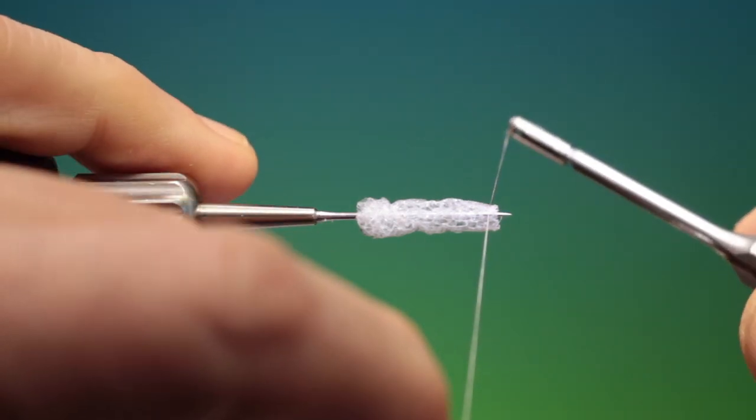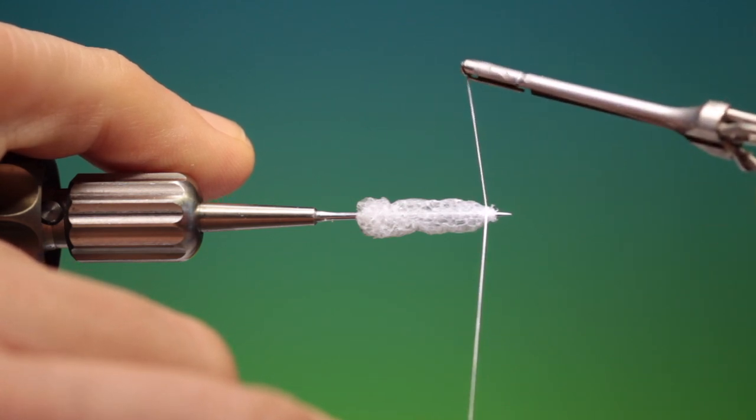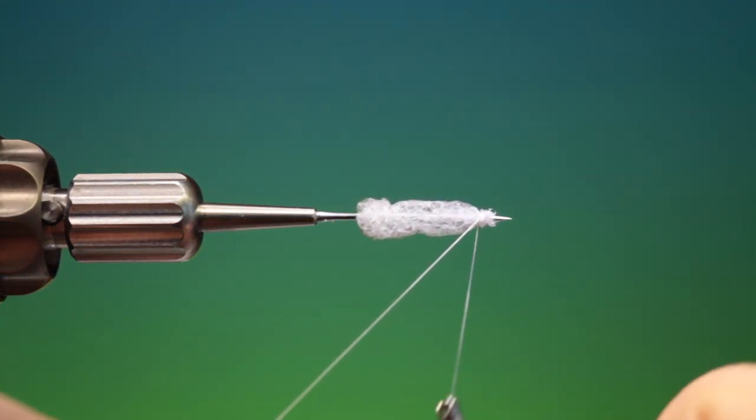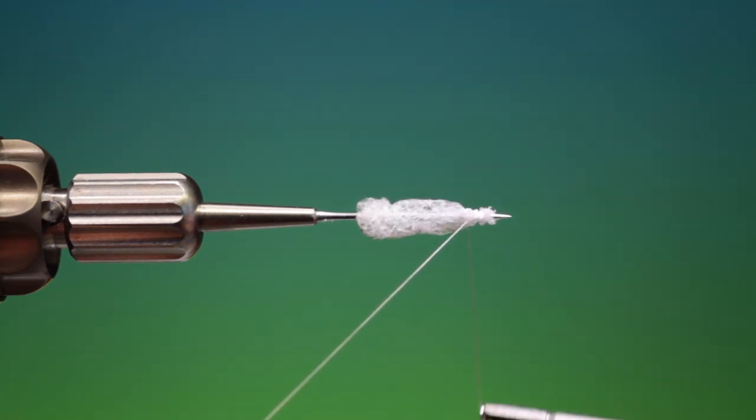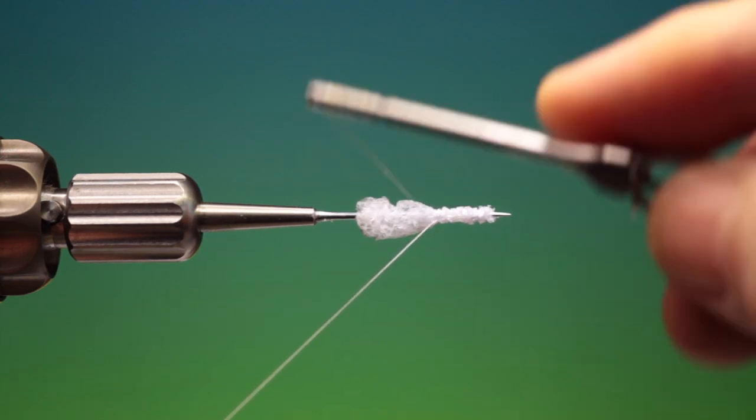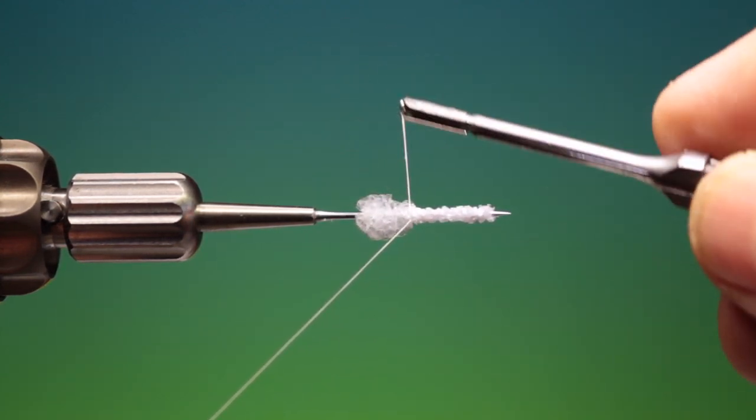Dyneema or GSP thread. Now you don't want to wrap this tightly otherwise it'll make it difficult to remove the body from the needle once you're done.